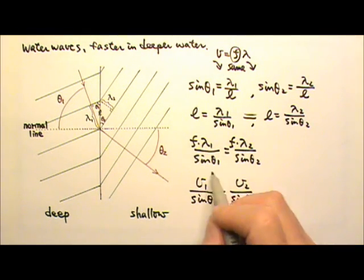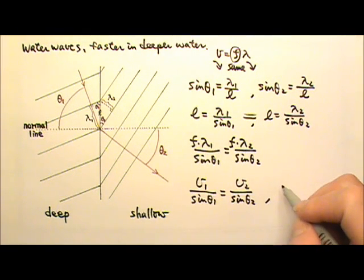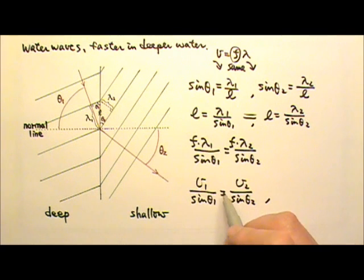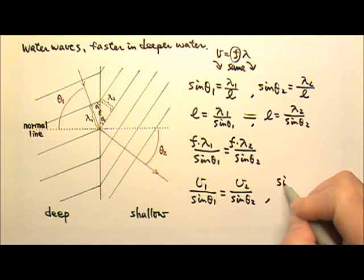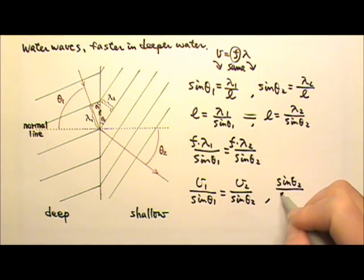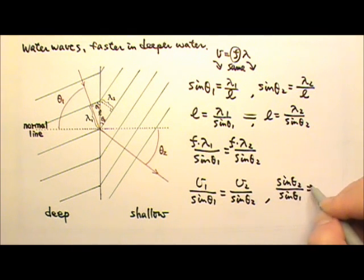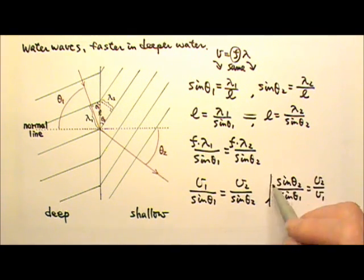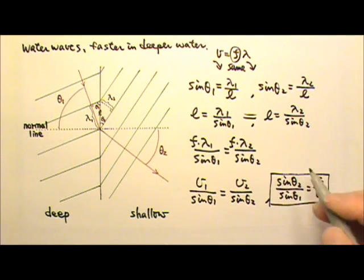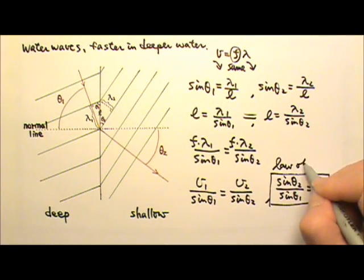This is the law of refraction, except most of the time people switch these two and write sine theta 2 over sine theta 1 equals V2 over V1. And this is the law of refraction.